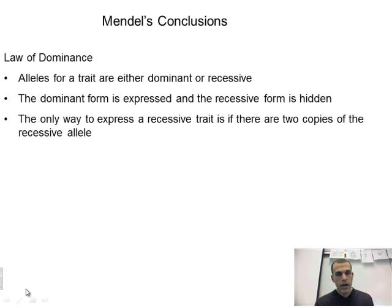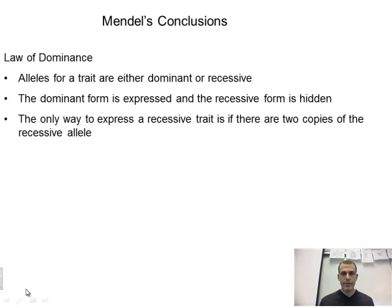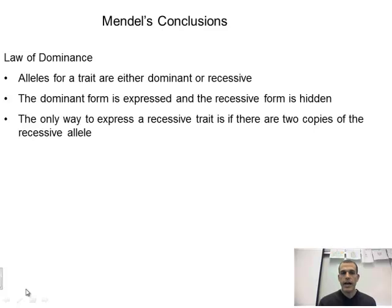The first law we're going to look at is the law of dominance. We've been talking about the law of dominance here in the last few days in class. Basically, your alleles are either going to be dominant or recessive. We know the capital letter is dominant and the lowercase letter is recessive. The dominant form is expressed, and the recessive form is always hidden.